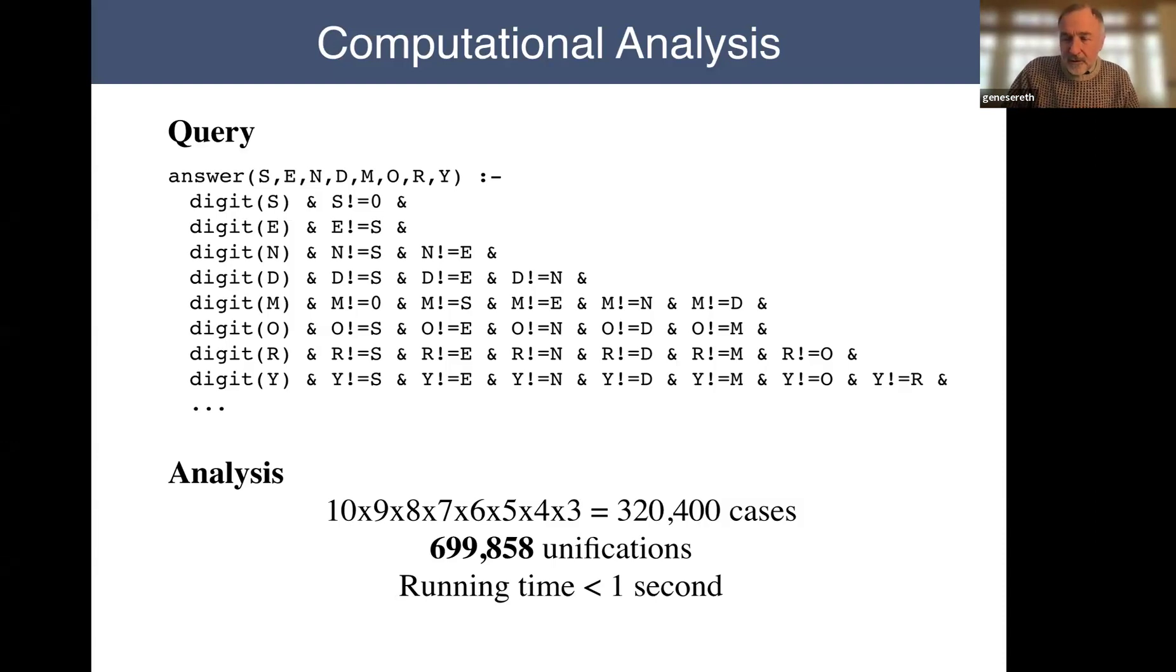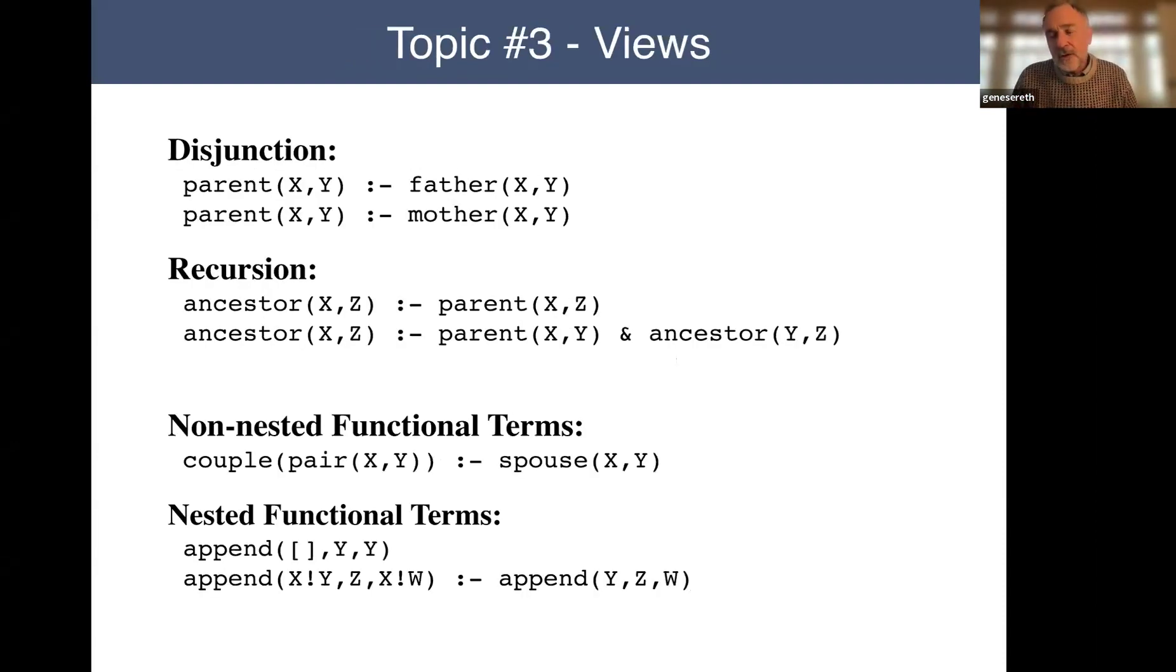All right, so that's queries. Once we've done with queries, the next step is to move on to views. And here we step up from the simple case of flat views written with conjunctions, possibly negations, and add other logical operators. So bring in disjunction, we bring in recursion at this point, and then also start to talk about functional terms, either functional terms which are not nested, a silly example here that a couple is two people are married to each other, or nested terms like lists. And this is the point at which we introduce append and membership and other classical logic programming examples.